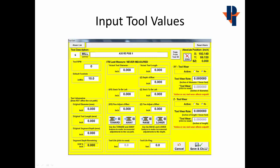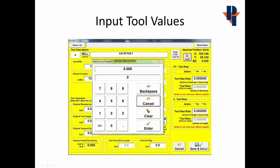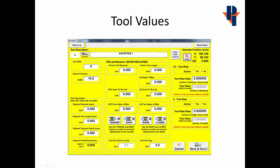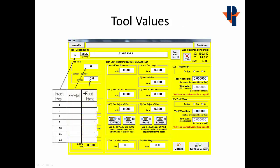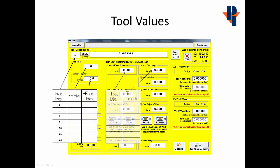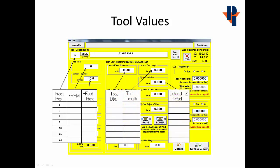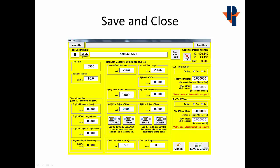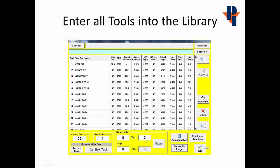Next, we'll start filling out the rest of the fields by selecting a field and entering a value. We'll repeat this process for the RPM, the Feed Rate, the Tool Diameter, the Tool Length, and the Default Z. When this information is all entered correctly, we'll choose the Save and Close button. We'll repeat this process until all tools are successfully entered into the Tool Library.